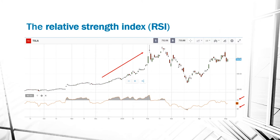As we can see, the Tesla stock almost tripled in a matter of a few months. And in several cases, we can see that we had conditions that were above the 70 line, indicating that Tesla stock was overbought or overvalued.